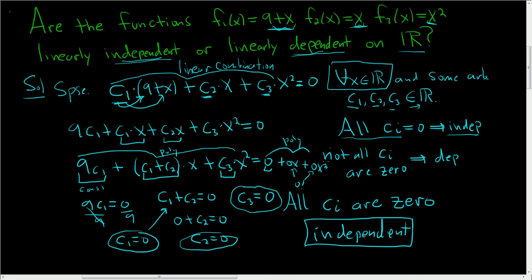If it turns out that not all of them are 0, then the answer is dependent. And just to make the point, if we would have had c sub 1 equals 0, c sub 2 equals 0, and say c sub 3 equals 2, then the answer would have been dependent. But that wasn't the case. That's not what happened here. Here the answer is independent.